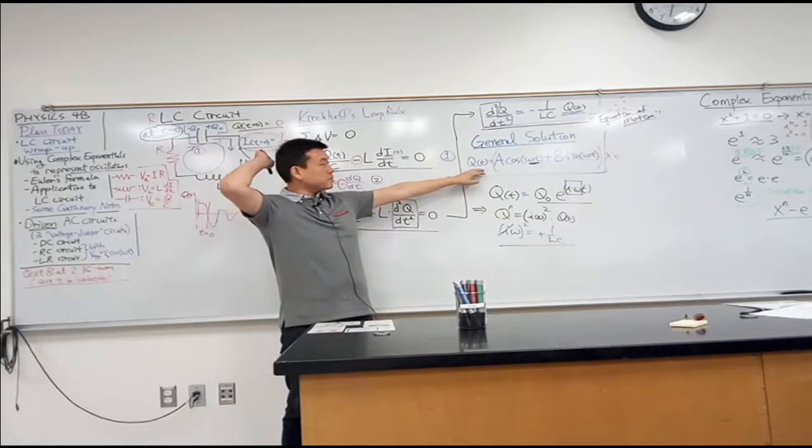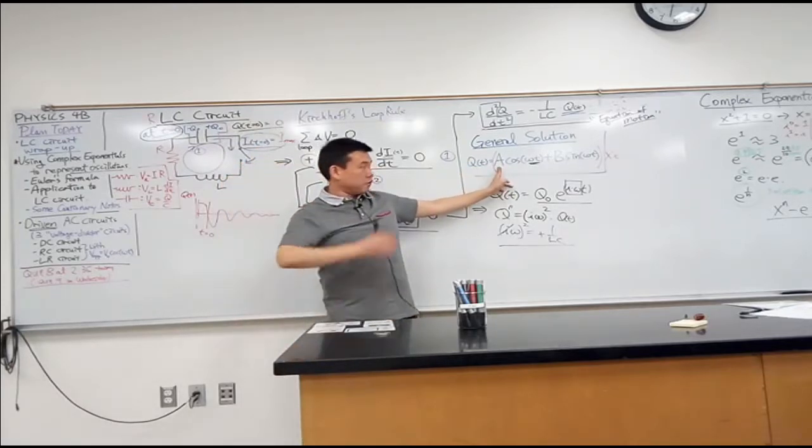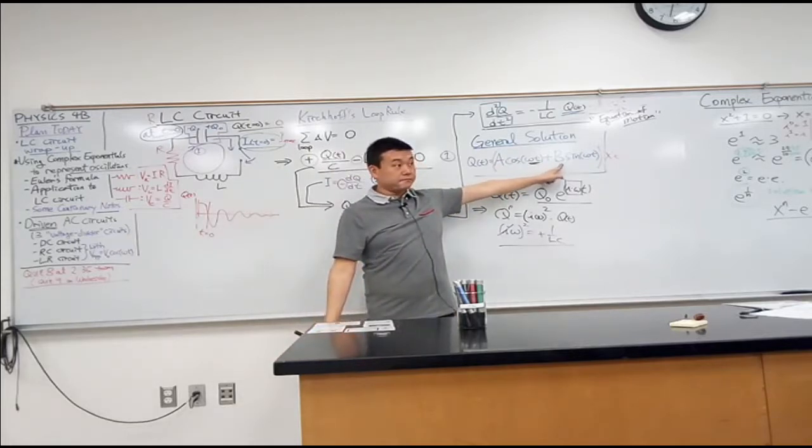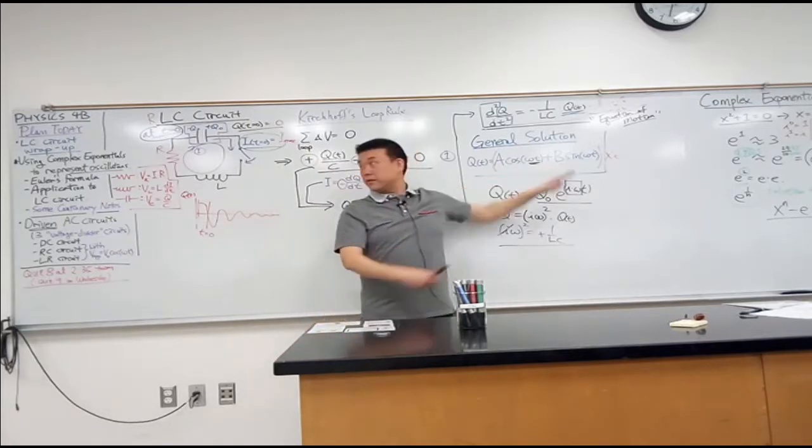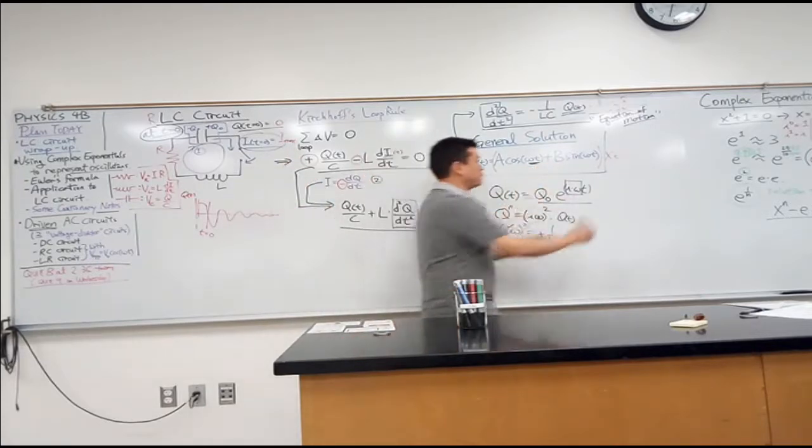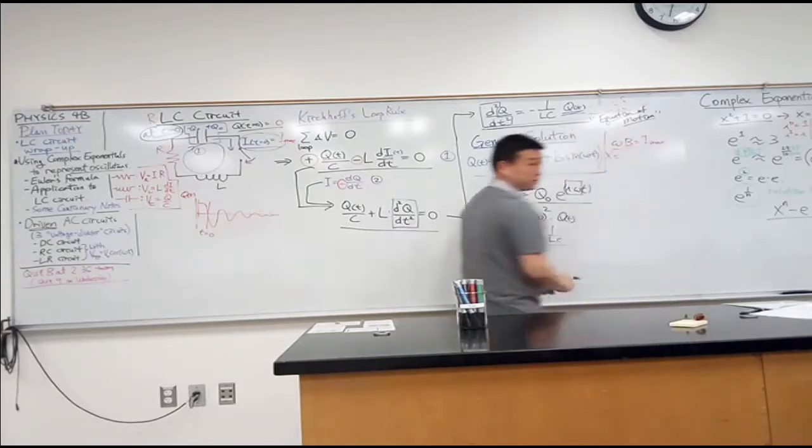You see that how? Right? When you plug in q equals time equals zero, so that tells you a is equal to zero, but the solution doesn't need to be zero because I have this b here, right? So let the derivative be equal to this, that will give you the value of b. So you get omega b is equal to i max when you actually go through the calculation.